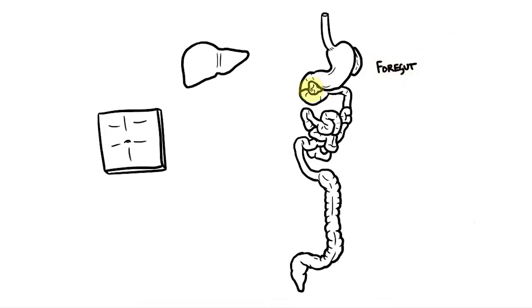Then we have the midgut, continuing until around two thirds of the way along the transverse colon. And then finally the hindgut completes the gut tube and terminates with the rectum.